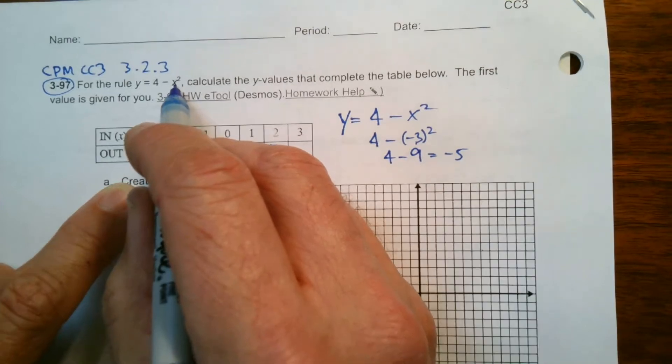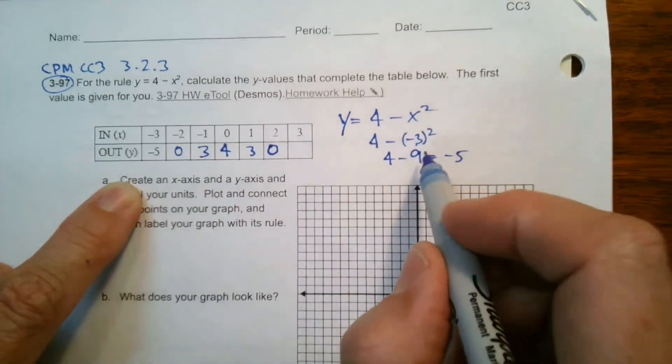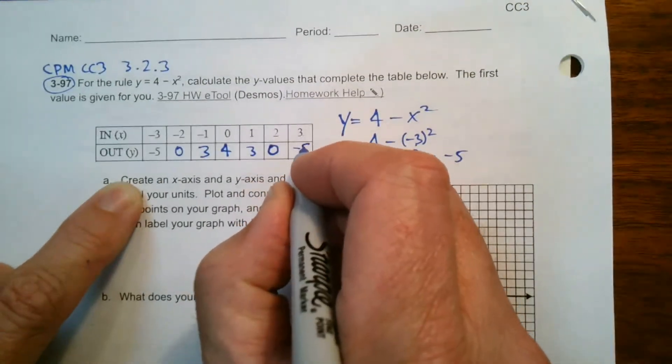And then put a three in, three squared, just like this one, actually, negative three squared is nine. Three squared, positive three squared is also nine. So you're still going to get negative five.